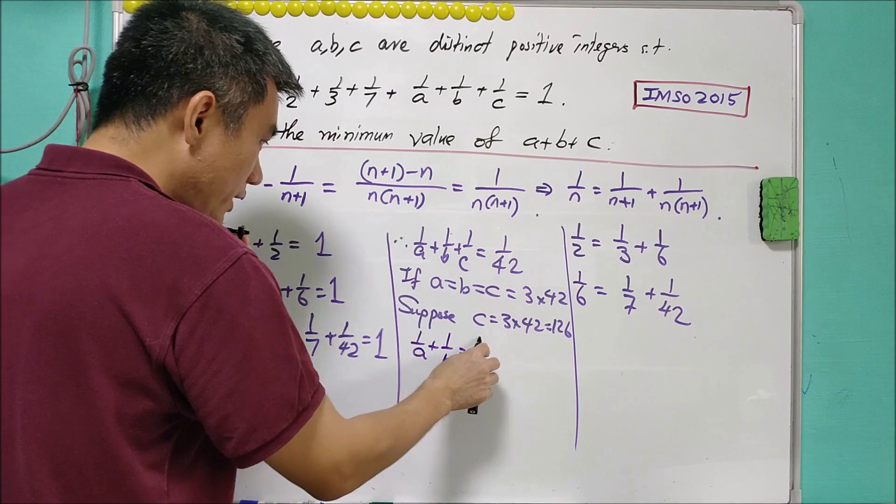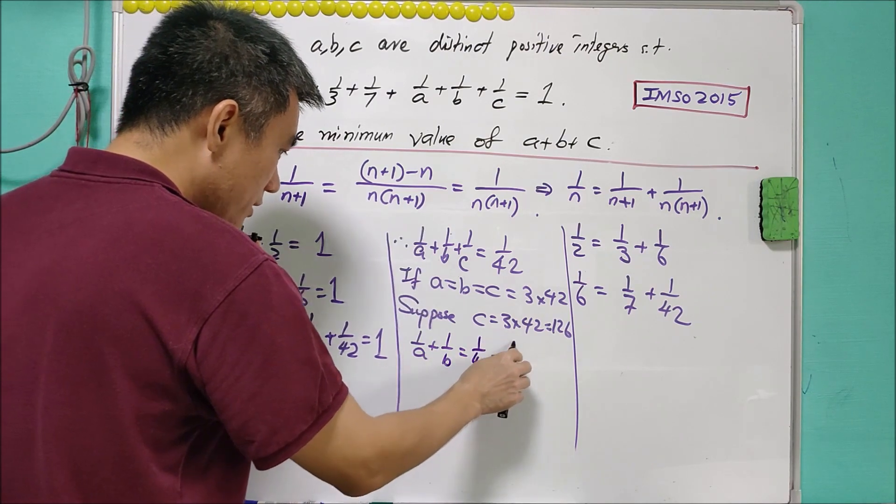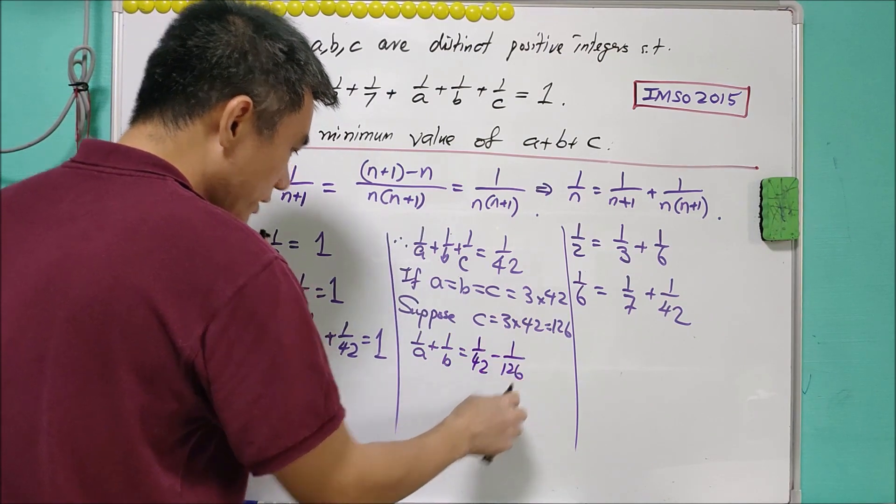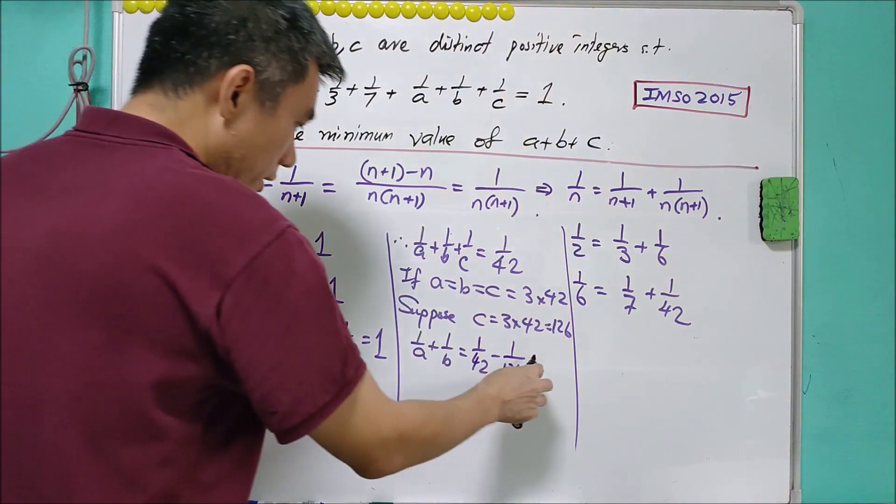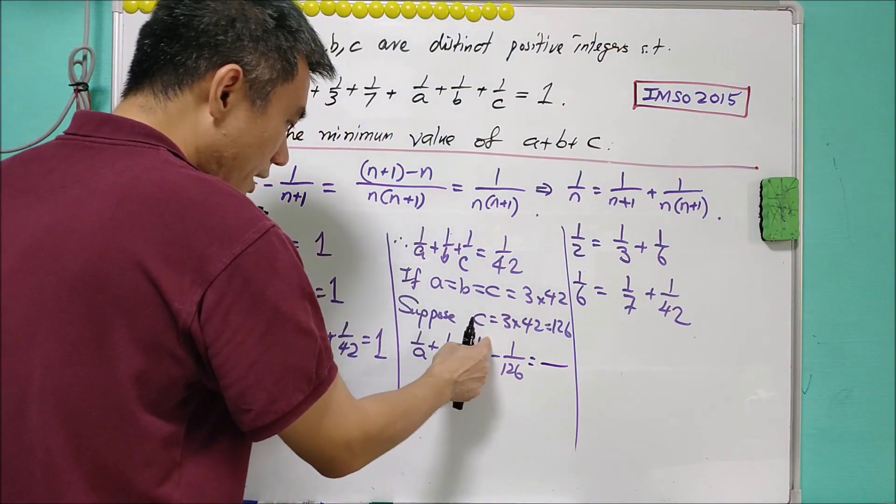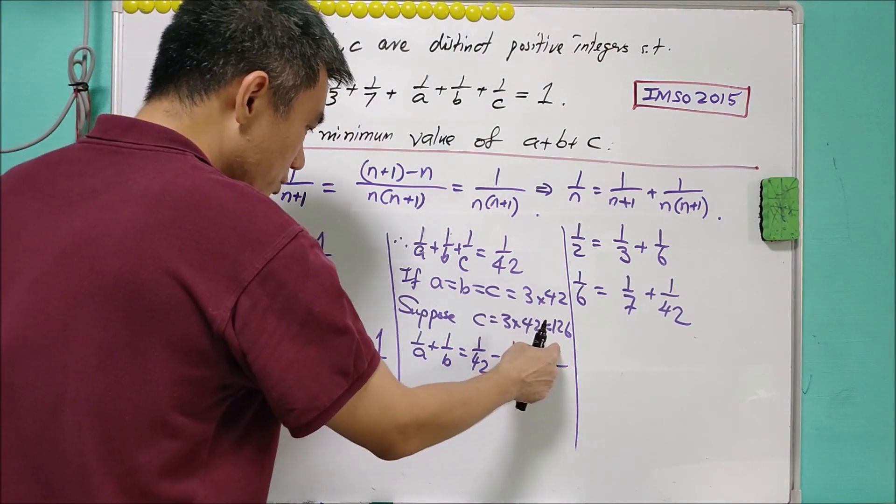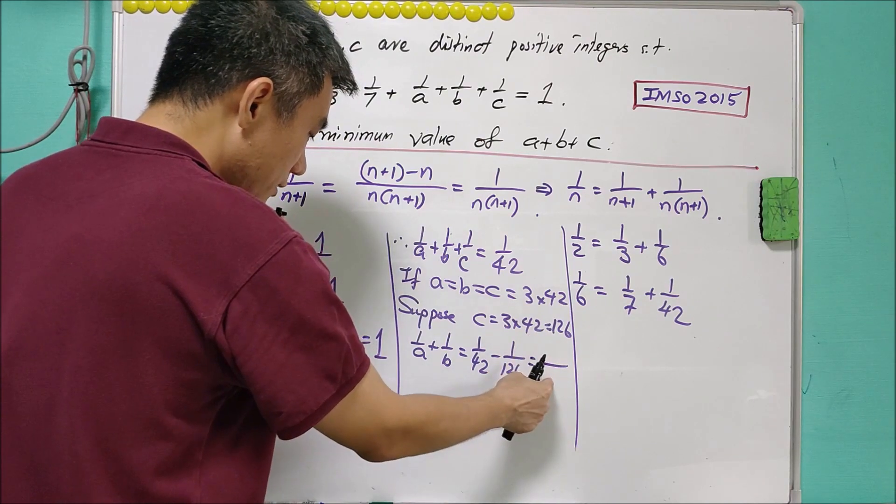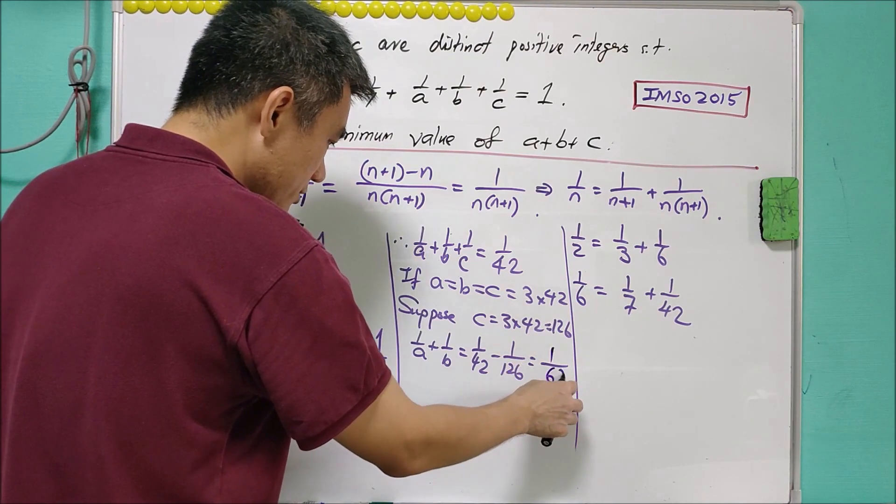1 over A plus 1 over B equals to 1 over 42 minus 1 over 126. So it is equal to, times 3 times 3, 3 times 1 is equal to 2, 2 over 126 is 1 over 63.